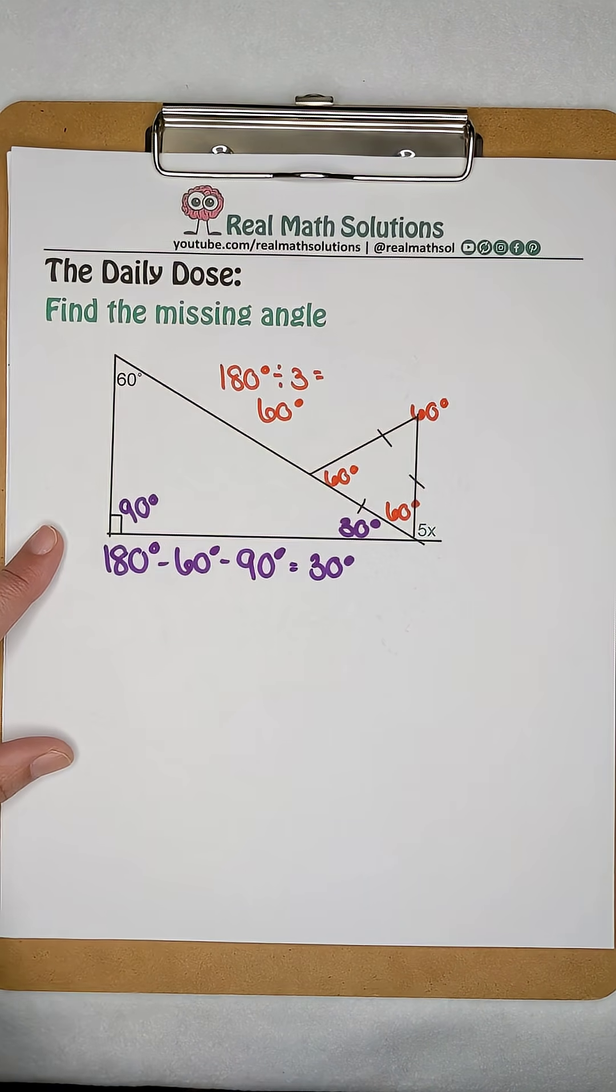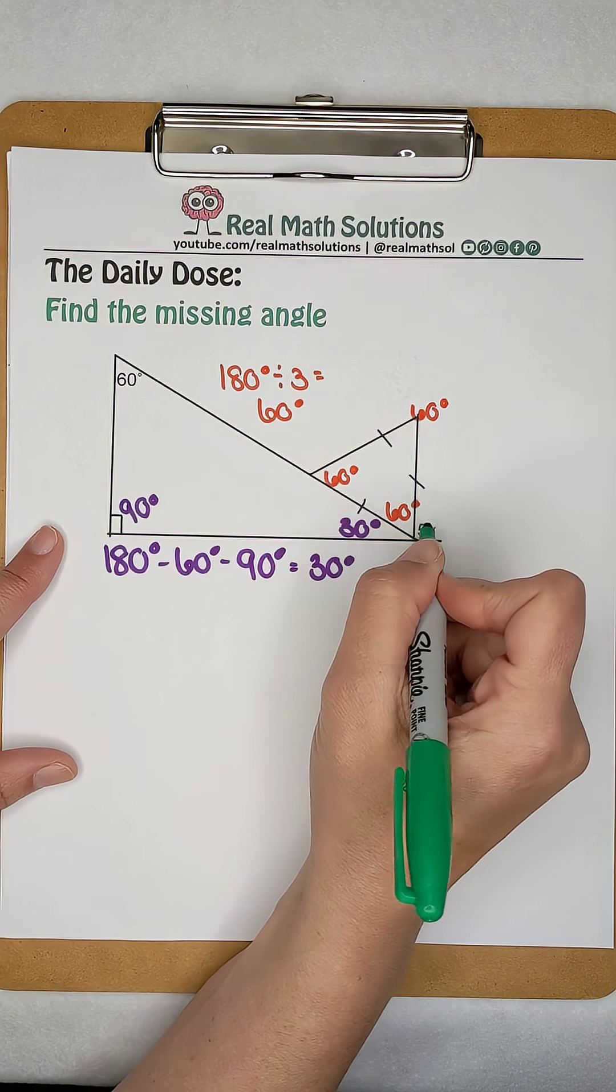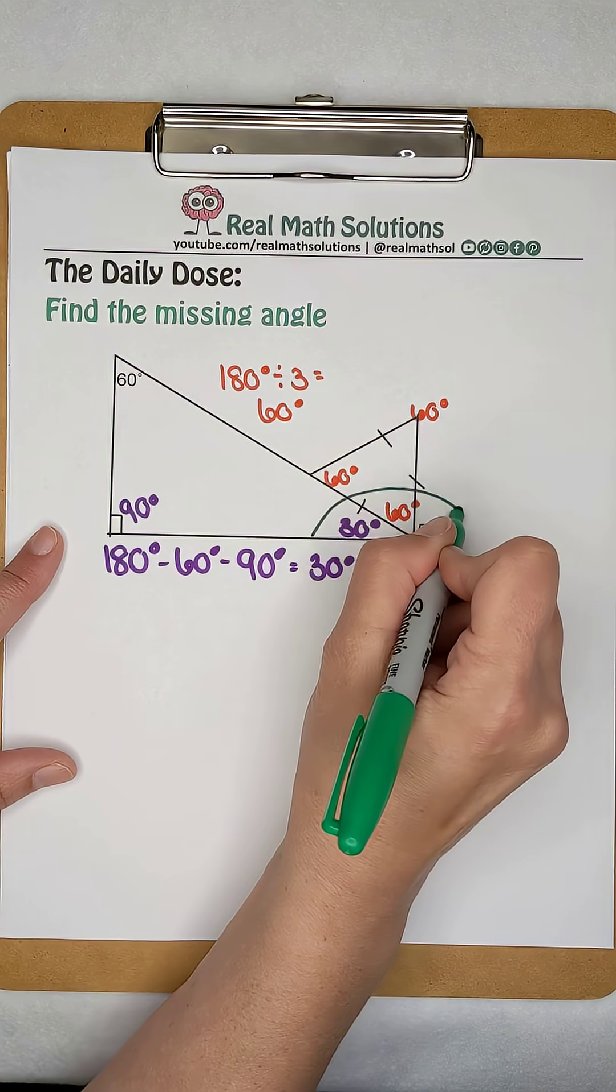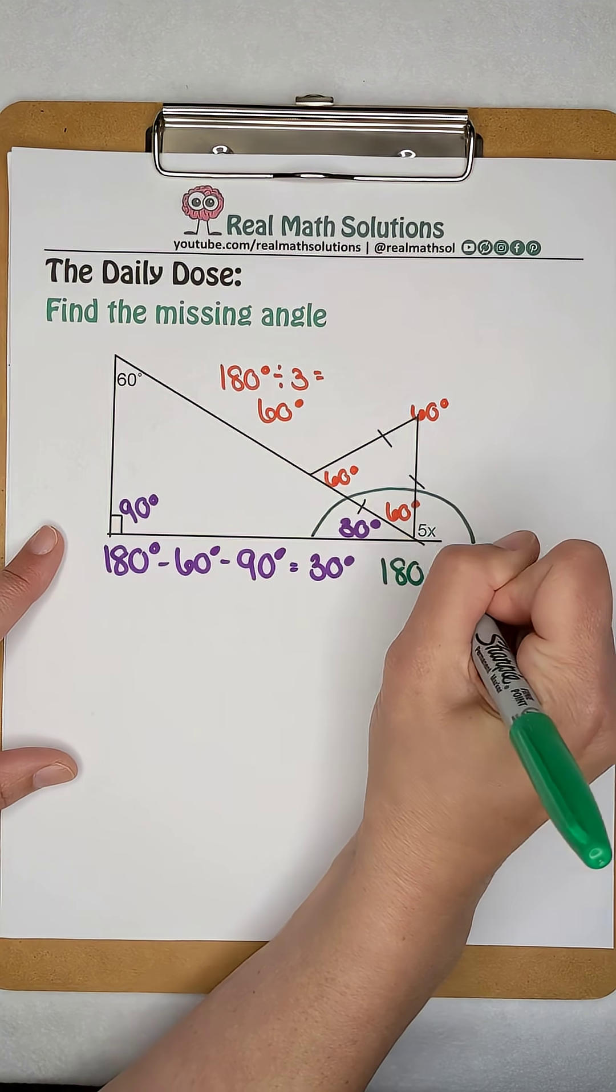Now we can use what we know to find our missing value and then solve for x. 30 degrees plus 60 degrees plus 5x together make a supplementary angle. So together they're worth 180 degrees.